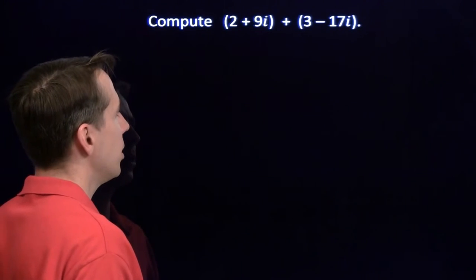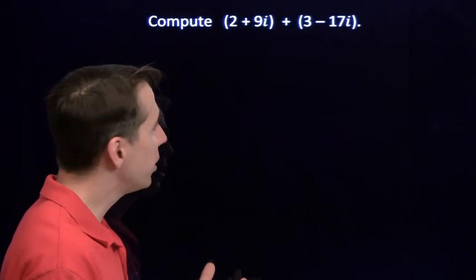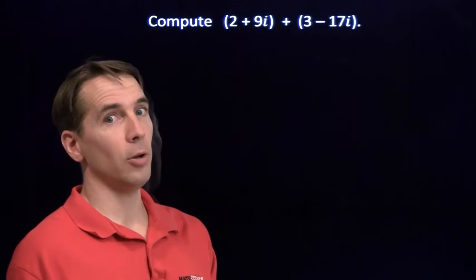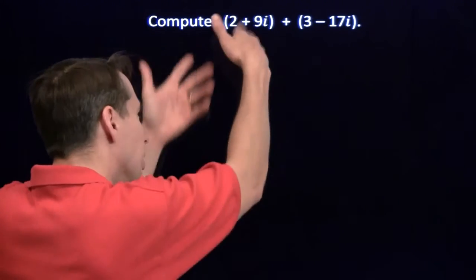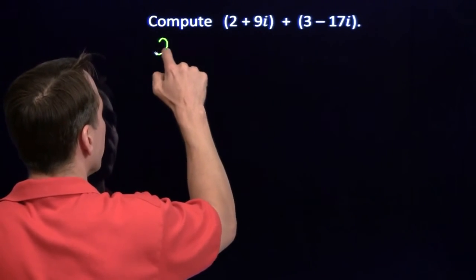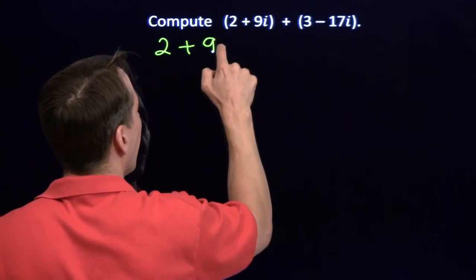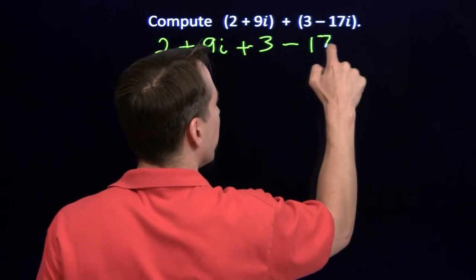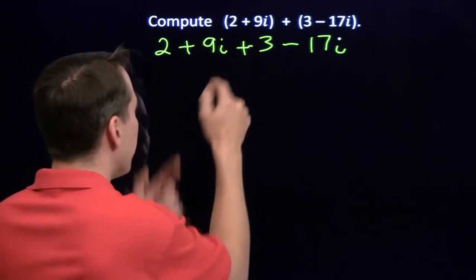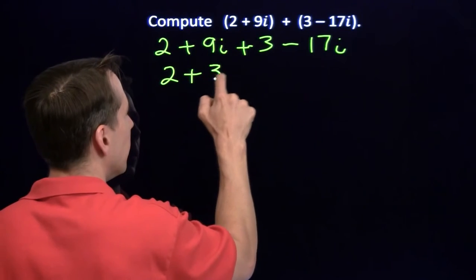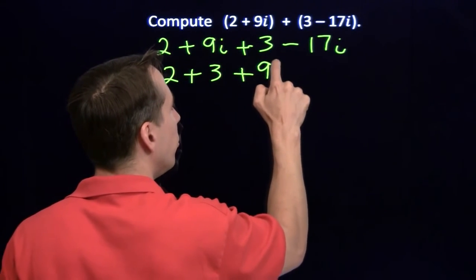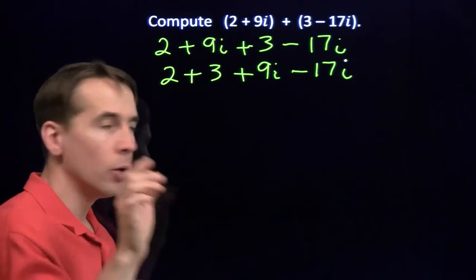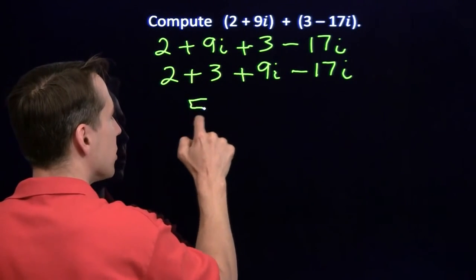So let's add these complex numbers and see what happens. Now one nice thing about addition is it's commutative. Another nice thing is that it's associative. It's just a fancy way of saying we can remove these parentheses and write this as 2 plus 9i plus 3 minus 17i, and we can swap the 3 and the 9i. We're putting the pieces together that we know how to add. We know how to add 2 and 3, that gives us 5.